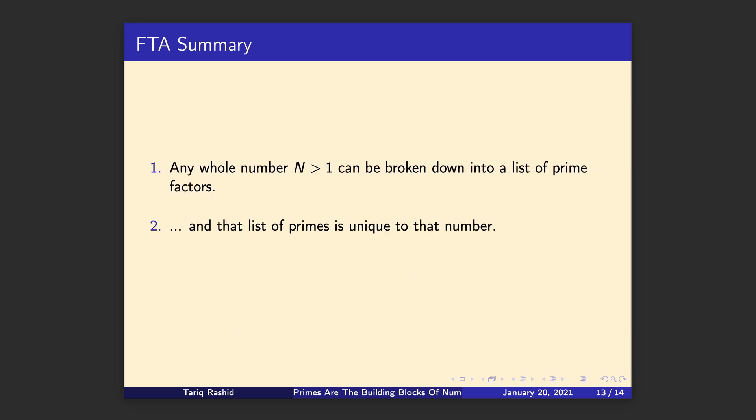So just to summarize that, any whole number more than one can be broken down into a list of prime factors. That's statement one, that's really important. That's why it's the fundamental theorem of arithmetic. And that list of primes is unique to that number. That's really important too. So that's the fundamental theorem of arithmetic. And it's really foundational. It might sound obvious, but it isn't always obvious. But it sits right at the bottom of this pyramid that we've built of mathematics. It's right at the foundation.